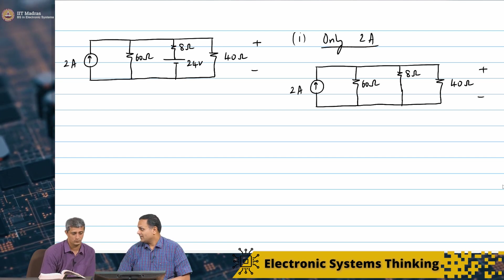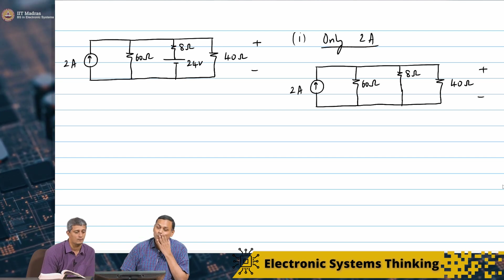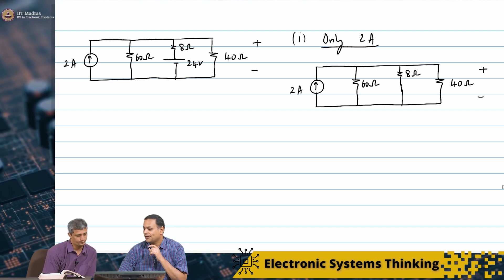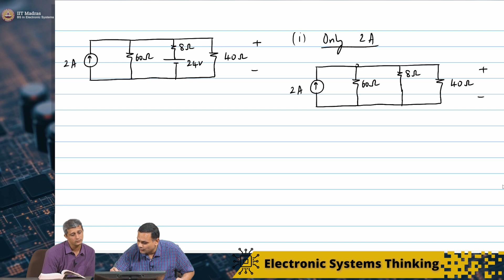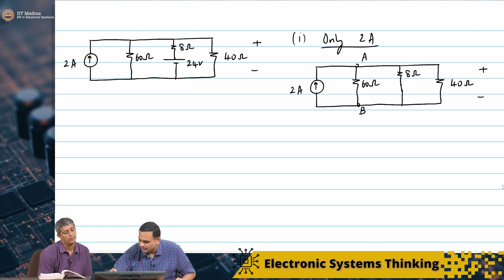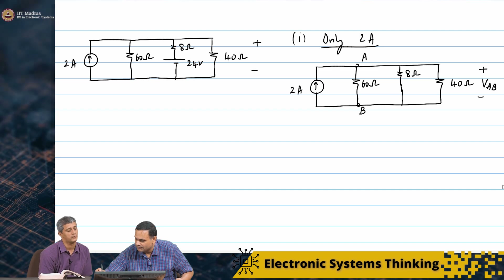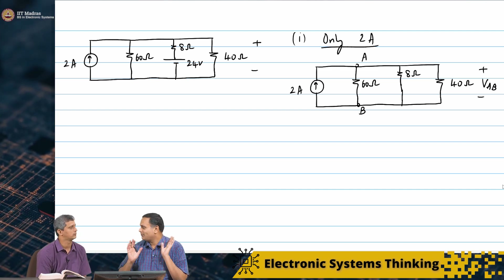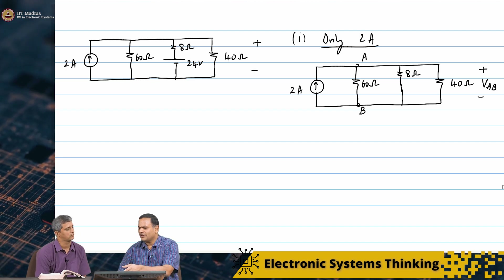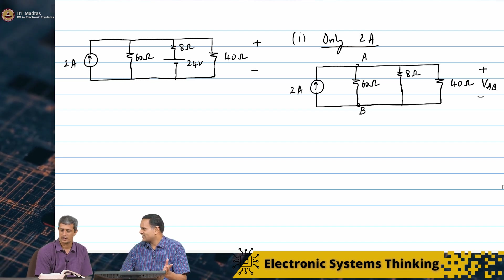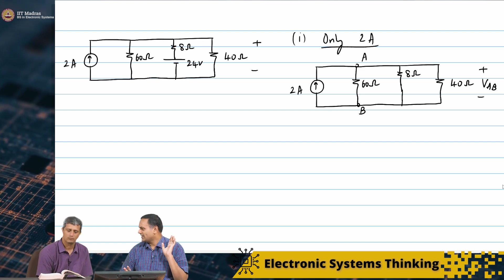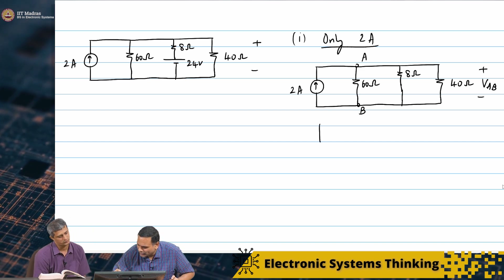I can actually do this many ways. I will call the nodes A and B. Because all three resistors are in parallel, one easy way is to find out the equivalent resistance of the 3 resistors in parallel, and then note that 2 amperes is flowing through that equivalent resistance.